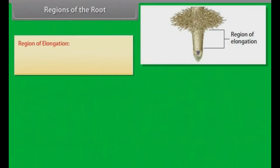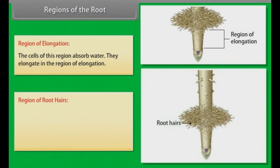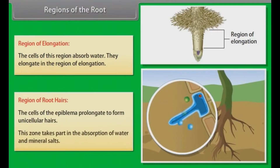Region of elongation: The cells of this region absorb water and elongate. Region of root hairs: The cells of the epiblema elongate to form unicellular hairs. This zone takes part in the absorption of water and mineral salts.